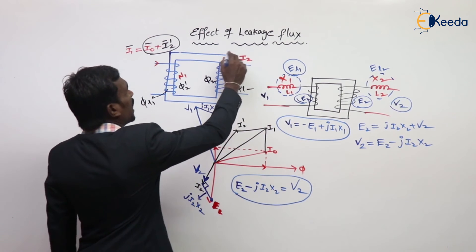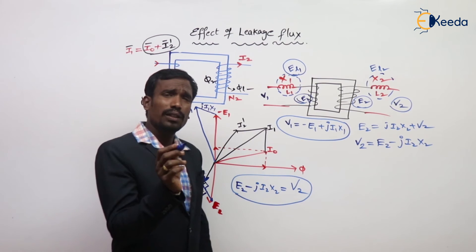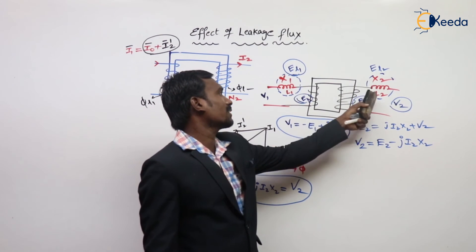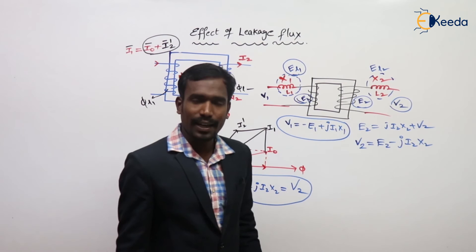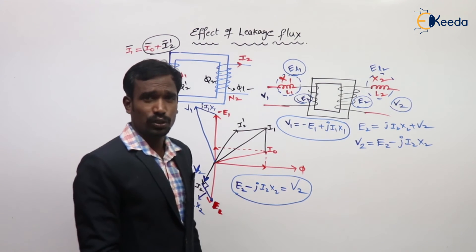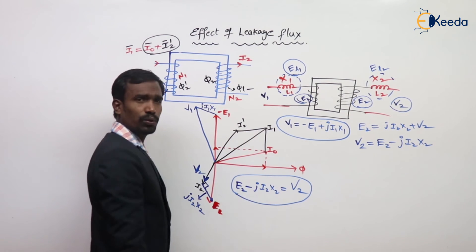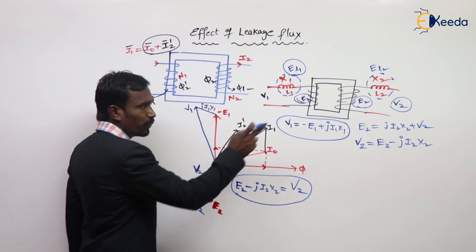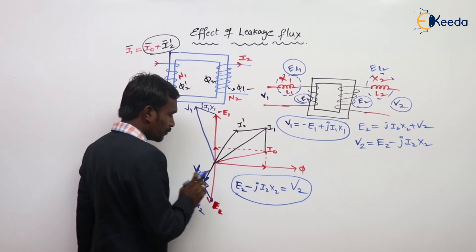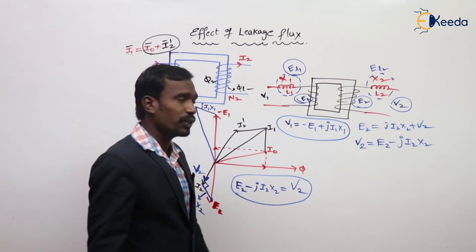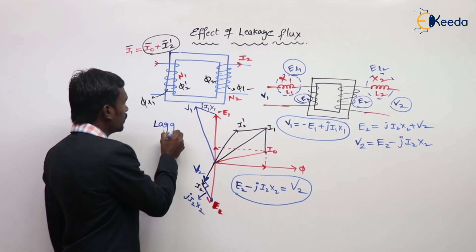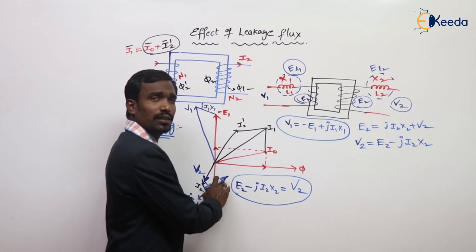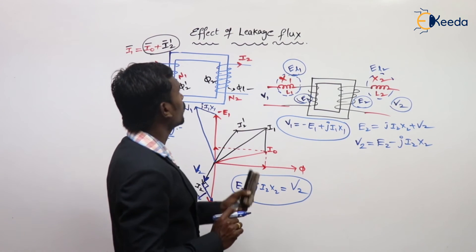Very simply, this is the effect of leakage flux. The voltage due to leakage flux is compensated by fictitious reactances in the equations, and by physical inductors in the circuit diagram. This is valid for lagging load, where current lags voltage. For leading load, the vector diagram would be drawn differently.